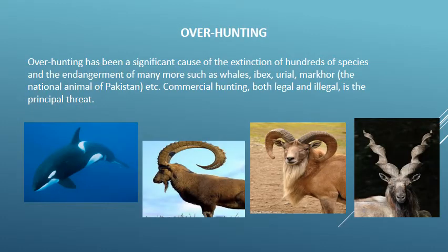Overhunting has been a significant cause of the extinction of hundreds of species and the endangerment of many more, such as whales, ibex, oreal, markhor — the national animal of Pakistan — and others. Commercial hunting, both legal and illegal, is the principal threat.